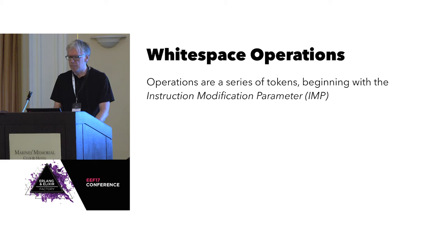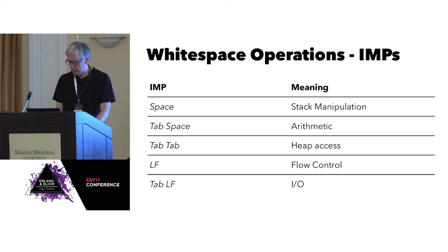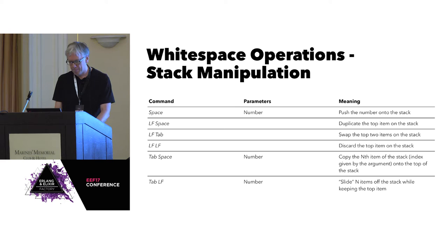The IMP is the high-level operation. We have stack, arithmetic, heap, flow, and IO. For stack, for example, we see stack is represented by space. A space means one of these is going to follow next: push, duplicate, swap, as indicated by the command on the left.